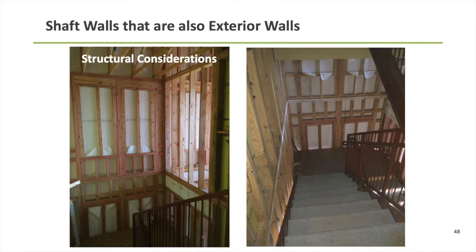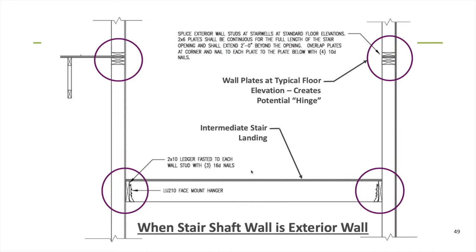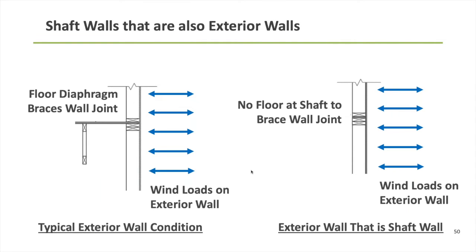Let's talk through a couple of structural implications of using wood frame shaft walls. The first is what I commonly refer to as having hinges in an exterior wall. This detail shows a cross section of a stair shaft on the exterior side of the building. In typical floor framing, as our exterior wall is subject to out-of-plane loads — wind or seismic acting out of plane — studs go into bending and place those out-of-plane reactions onto the floor diaphragm, which braces those studs and transfers diaphragm forces back into shear walls.